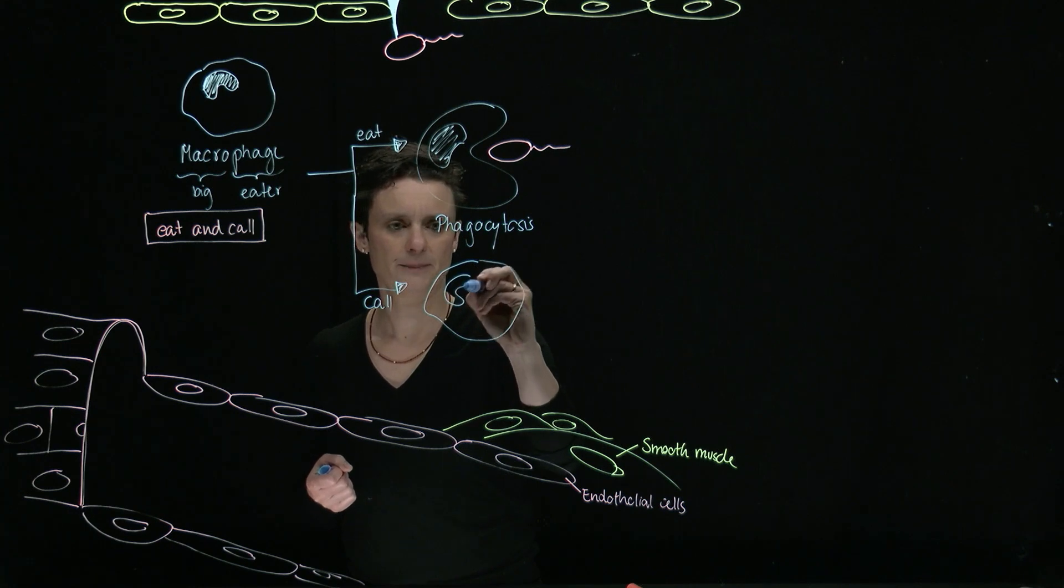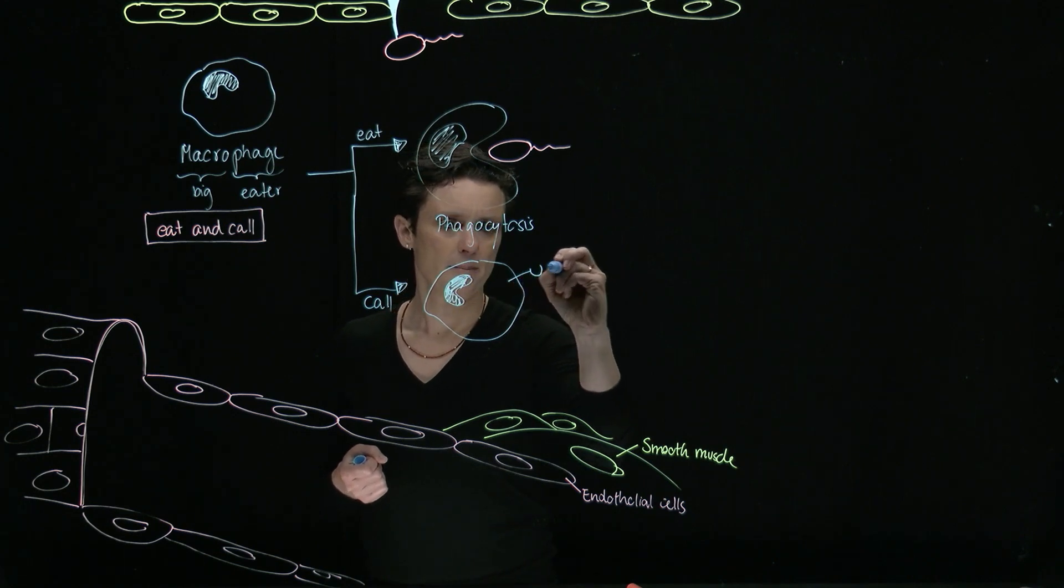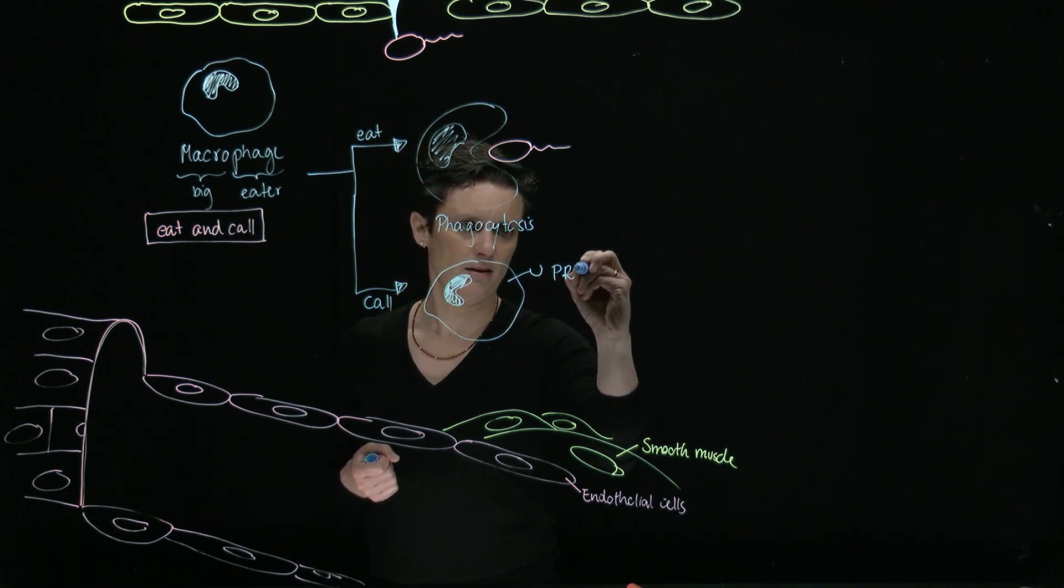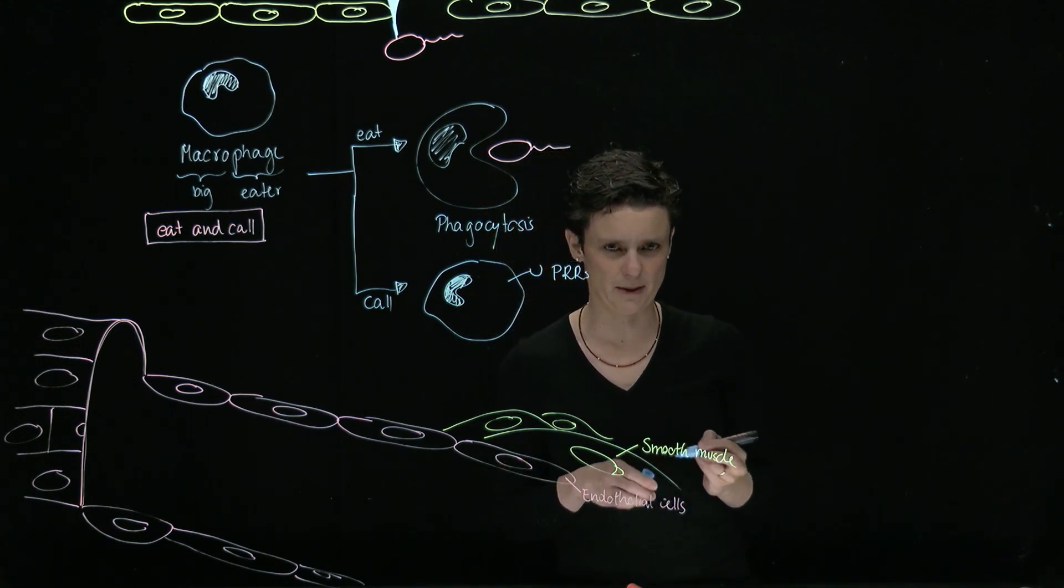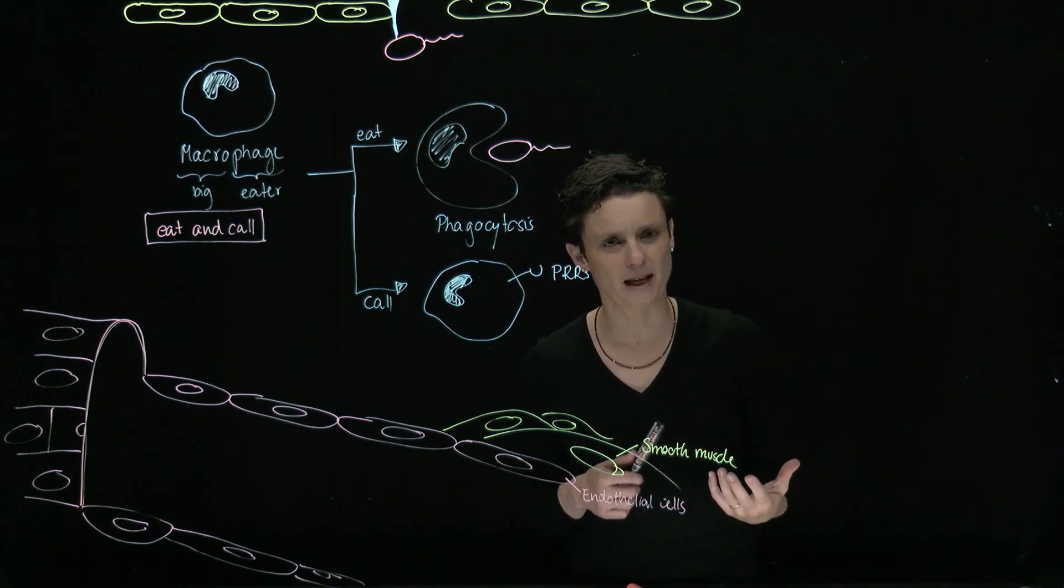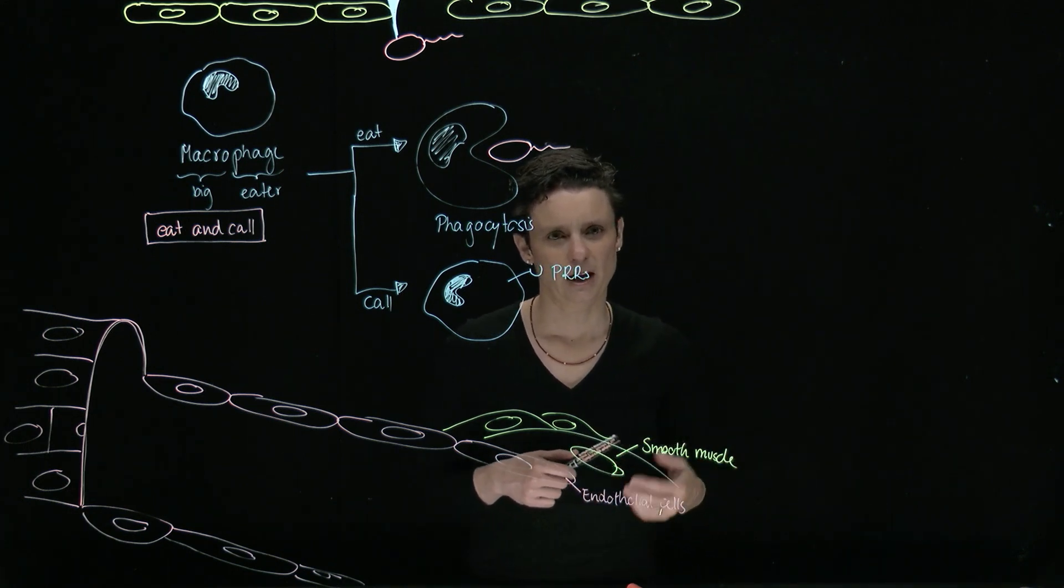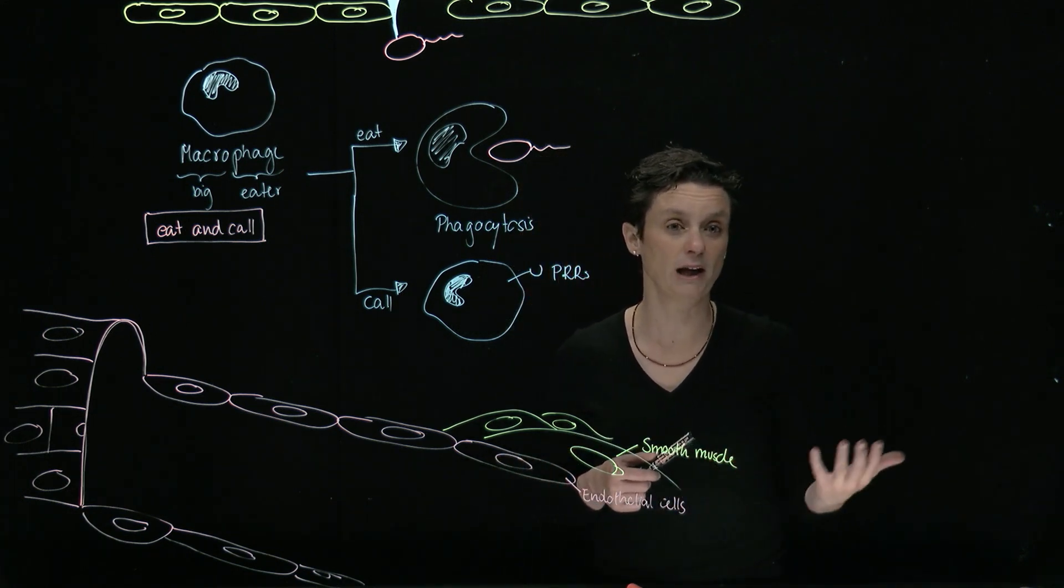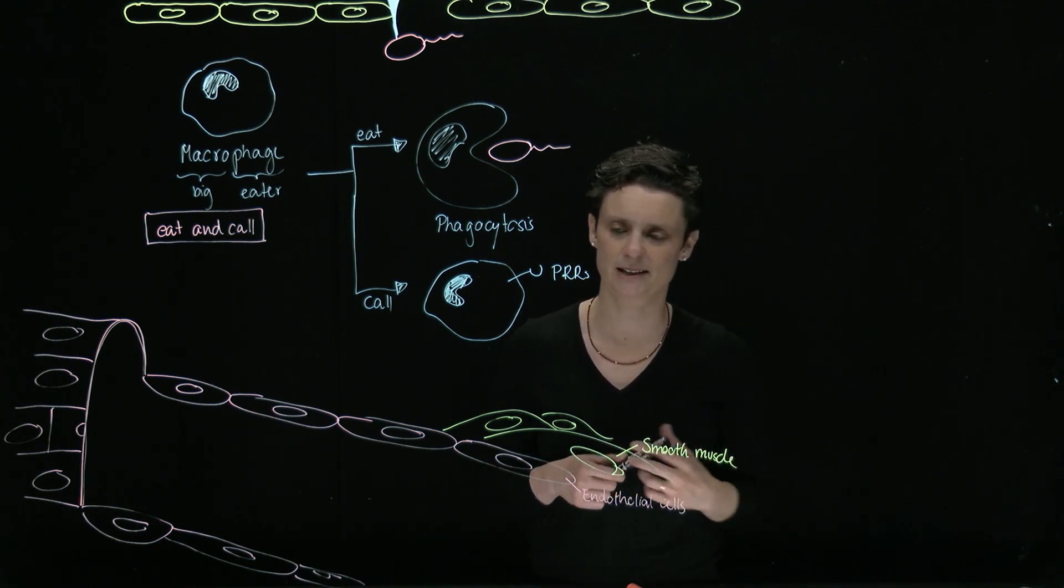This is our macrophage. The macrophage is equipped on its surface with so-called PRRs. This stands for pathogen recognition receptors. So as the name already implies, these are receptors that can recognize pathogens. Very famous examples are the toll-like receptors, TLRs, or NOD-like receptors, NLRs.